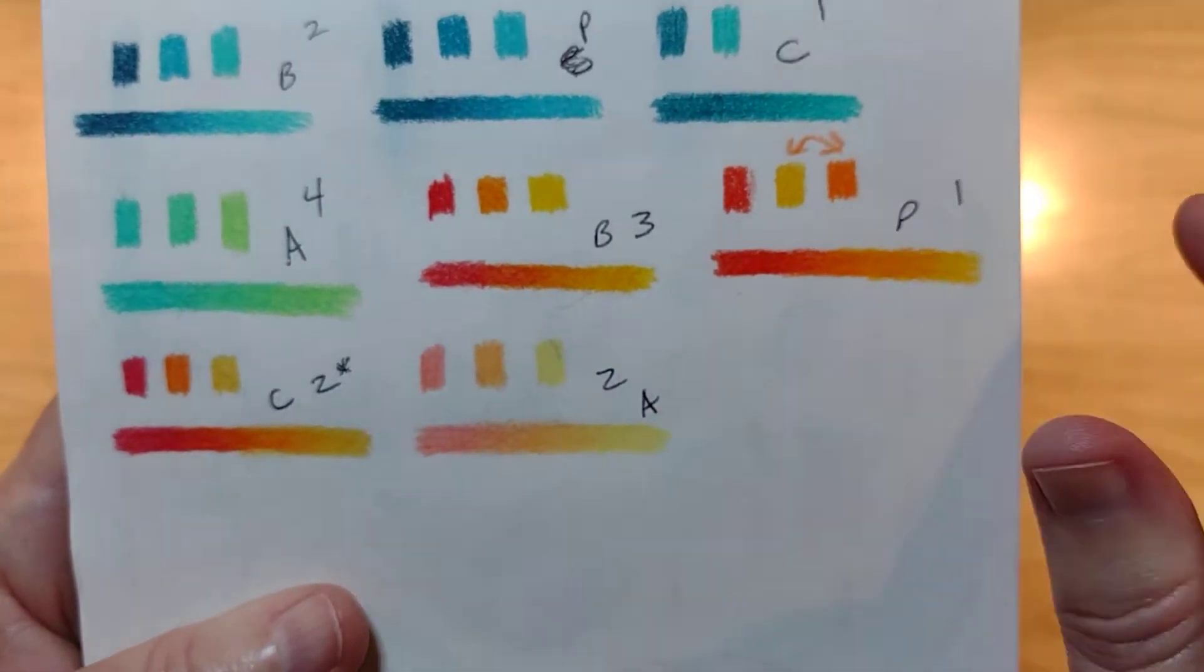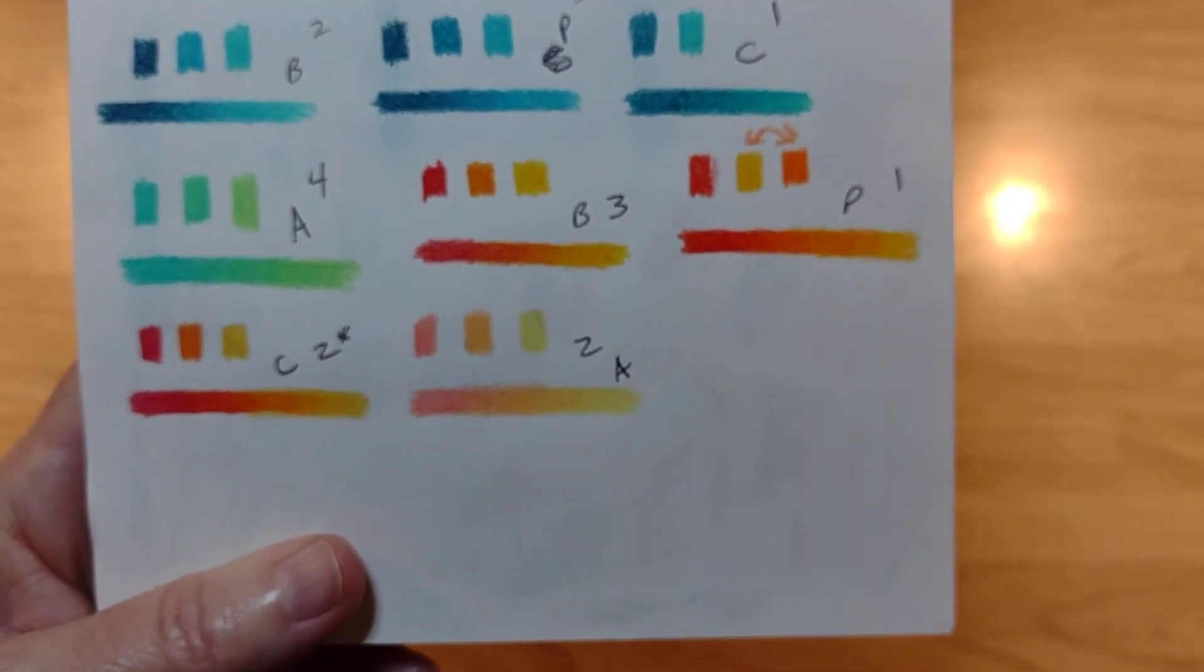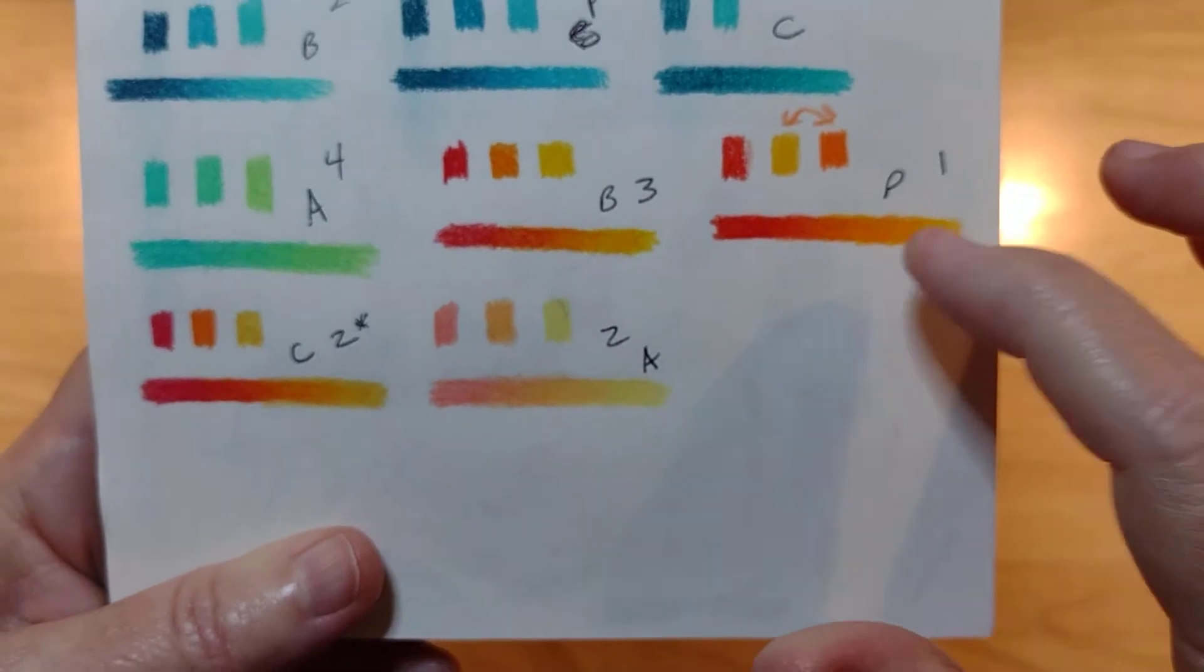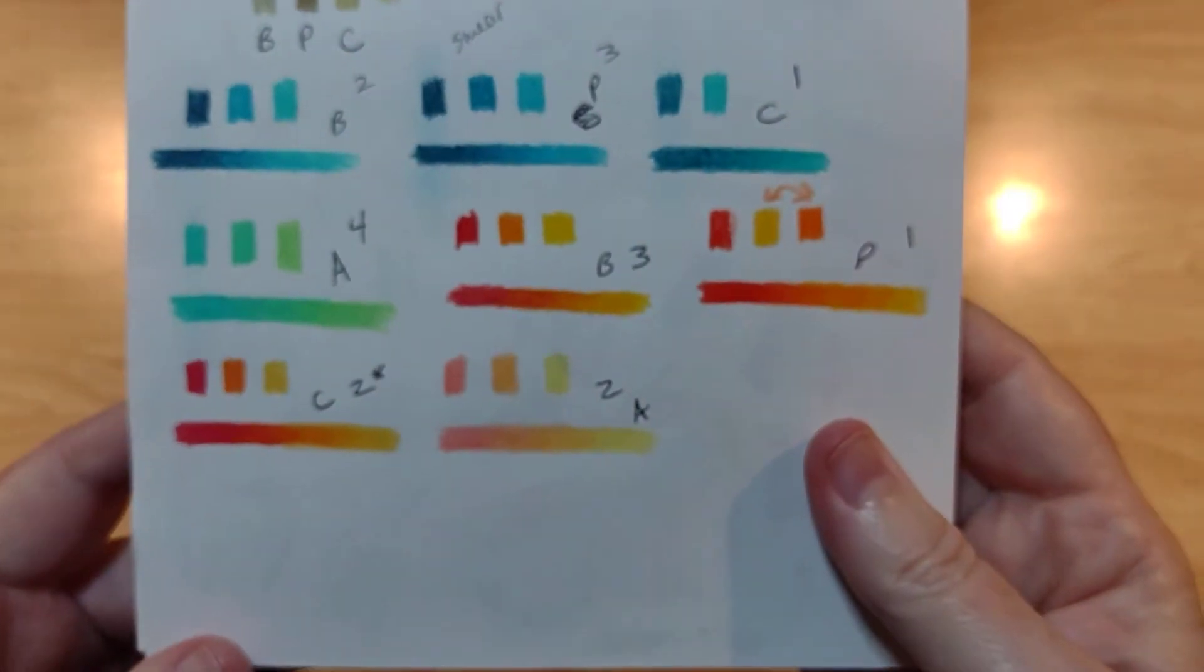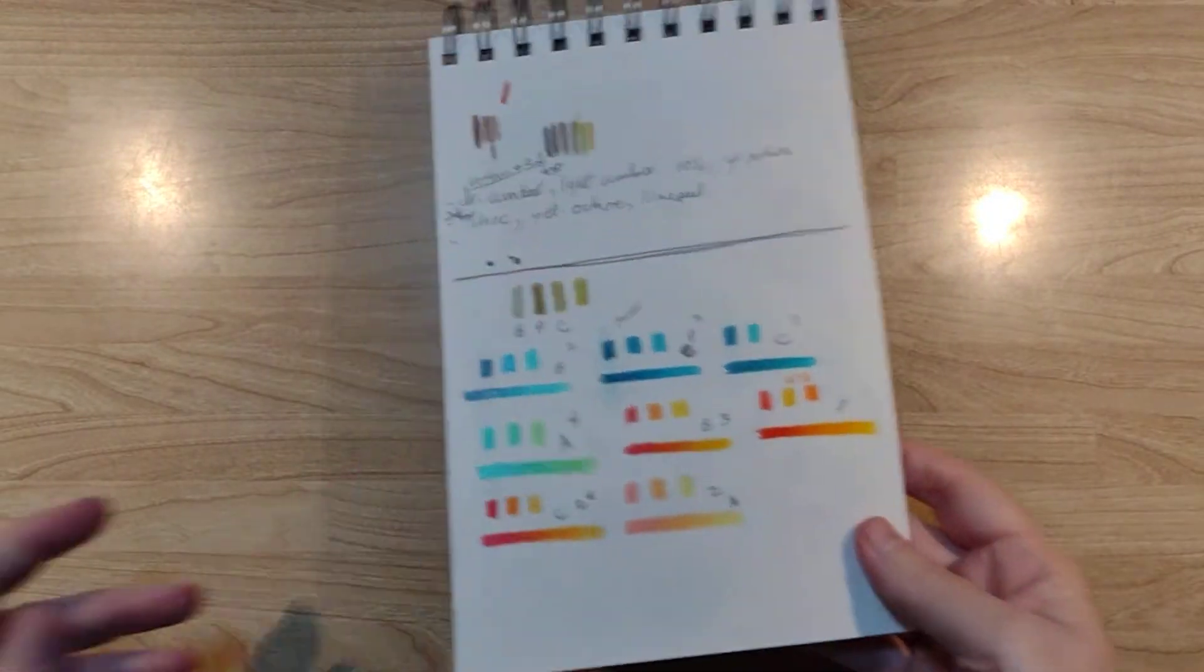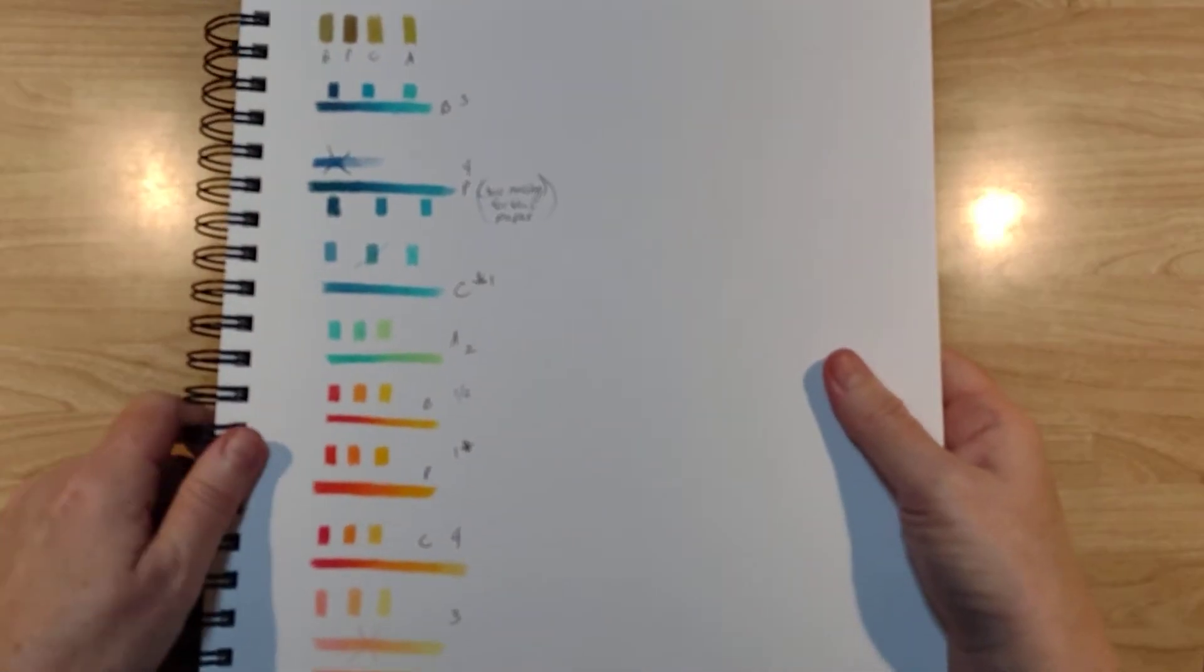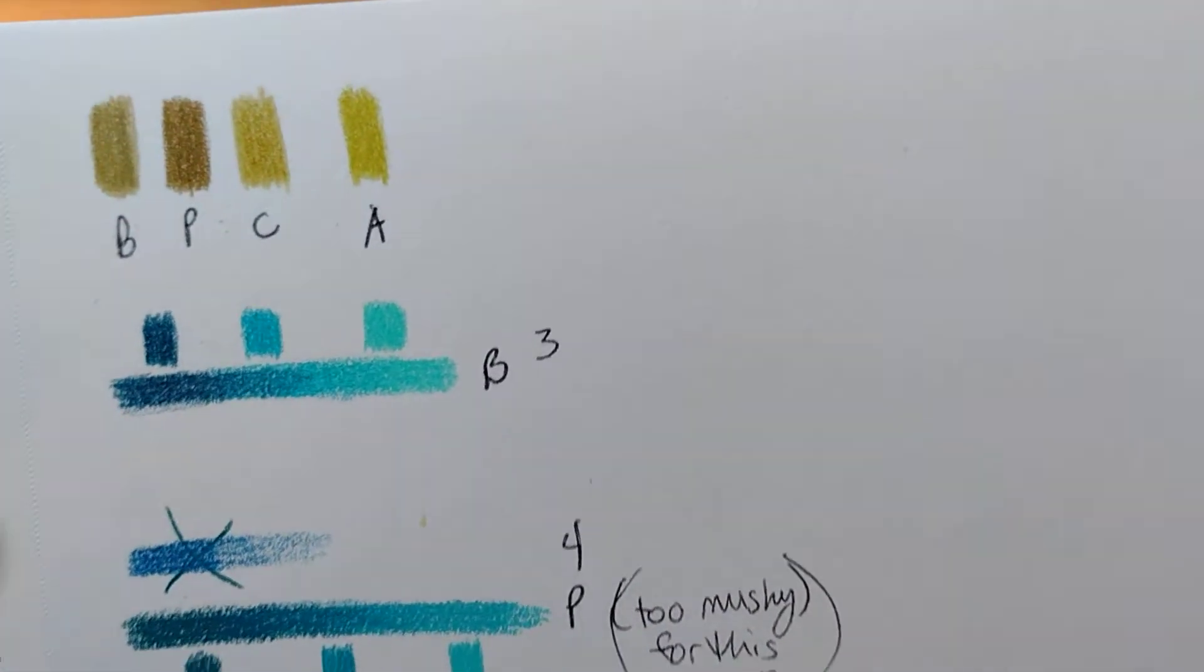That's just always the case in Prismacolor. On every paper that I tried, they blend better, and they're the most forgiving pencil. If you get carried away and you don't blend something as well as you should, you can just smoosh it in and blend it. Prismacolor kind of takes first place in that. Not a big surprise for most of us out there.